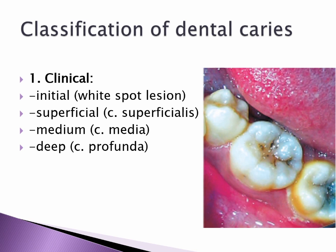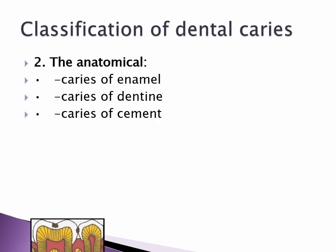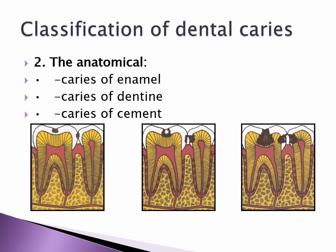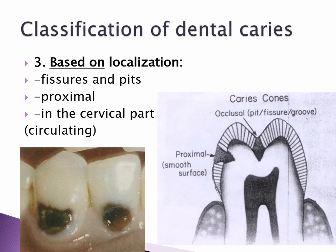2. Anatomical: caries of enamel, caries of dentine, caries of cement. 3. Based on localization: fissures and pits, proximal, in the cervical part (circulating).